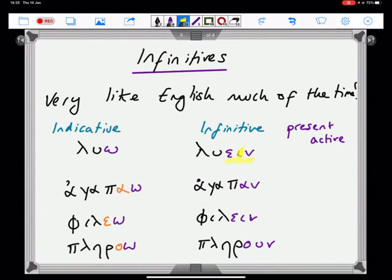But the iota drops out in ἀγαπᾶν and πληροῦν, and you've just got the lengthened vowels with the nu. So, λύειν, that's your basic form. φιλεῖν shows up with the ε-ω verbs, but the ω-ω and the α-ω verbs are a little bit different.